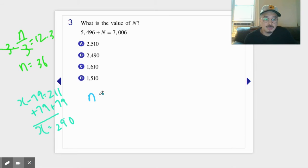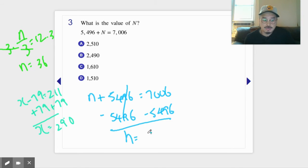I'm gonna rewrite this: n plus 5496 equals 7006. So what do you do? You subtract 5496, crosses out, and then you would get 1510.